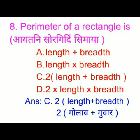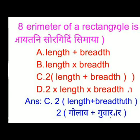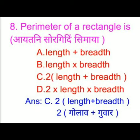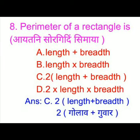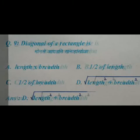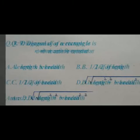The perimeter of a rectangle — we have four options and the right answer is option C: 2 times (length plus breadth). The diagonal of a rectangle — we have four options and the right answer is